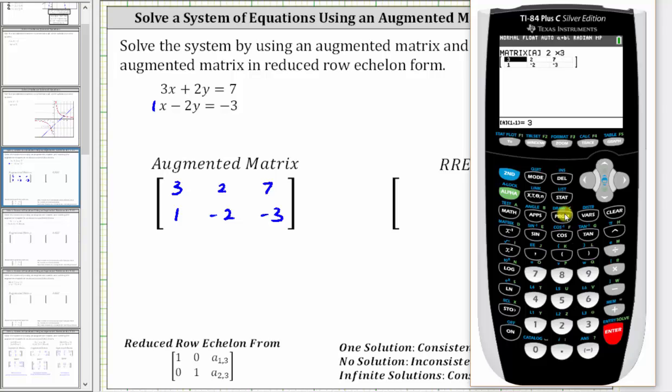We go back to the home screen by pressing second, mode for quit. Back to the matrix menu by pressing second, x to the power of negative one, right arrow once for math, up five times for RREF, which is reduced row echelon form. Press enter. And now we select matrix A. So we go back to the matrix menu. Second, x to the power of negative one. Matrix A is already highlighted. So we press enter, close parenthesis, and enter.